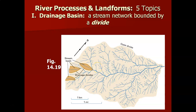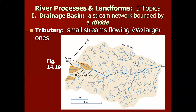Lecture number one: river processes and landforms. I have five specific topics that I want to talk about, and I want to begin with the drainage basin. A drainage basin is a stream network bounded by a divide. What a stream network is composed of is a whole series of tributaries — small streams flowing into progressively larger ones.